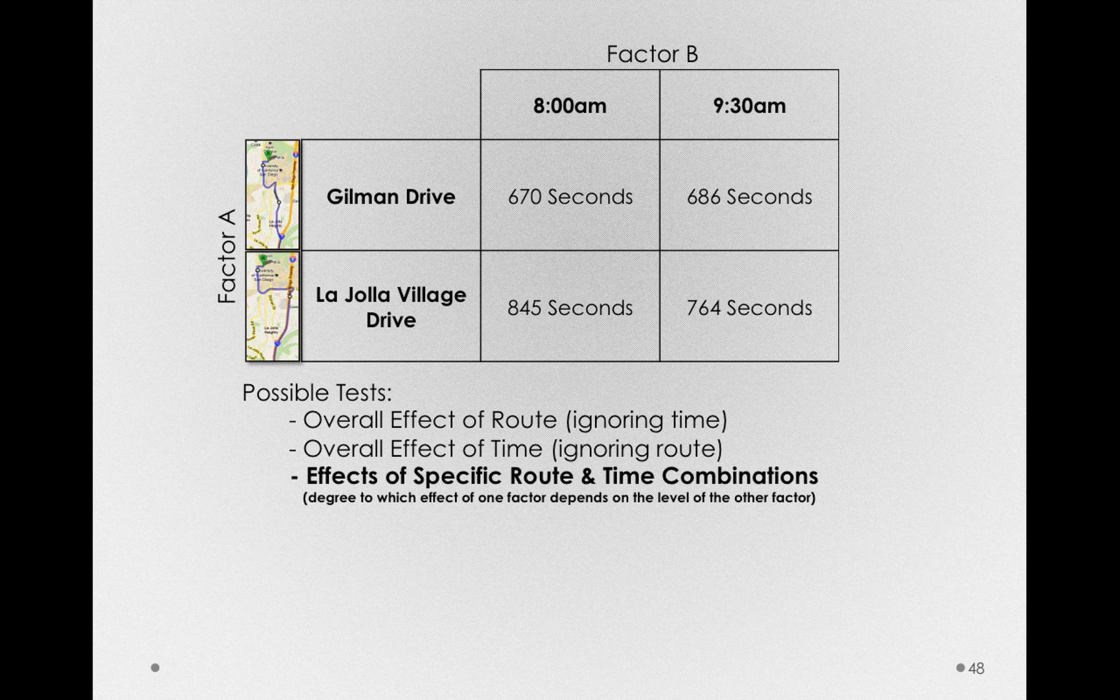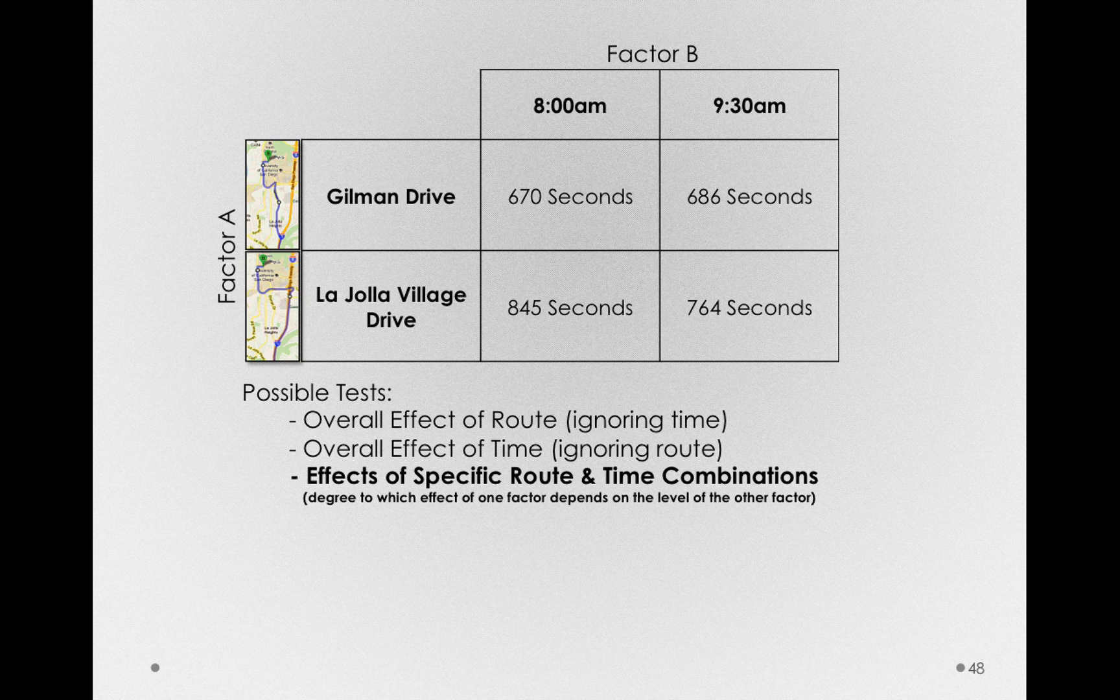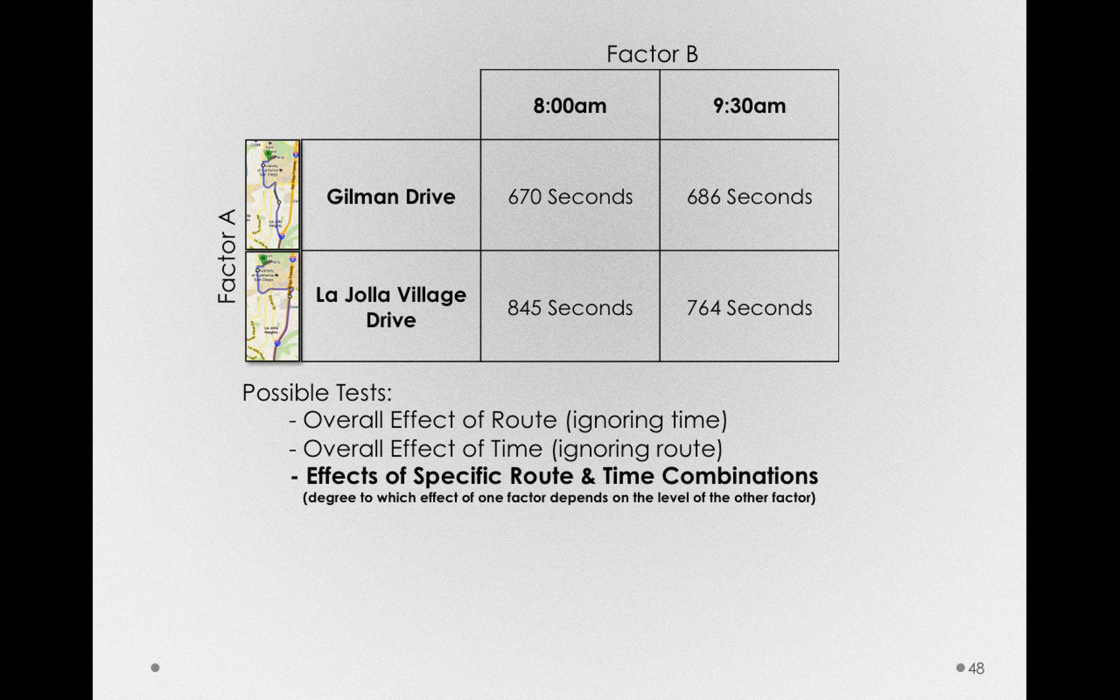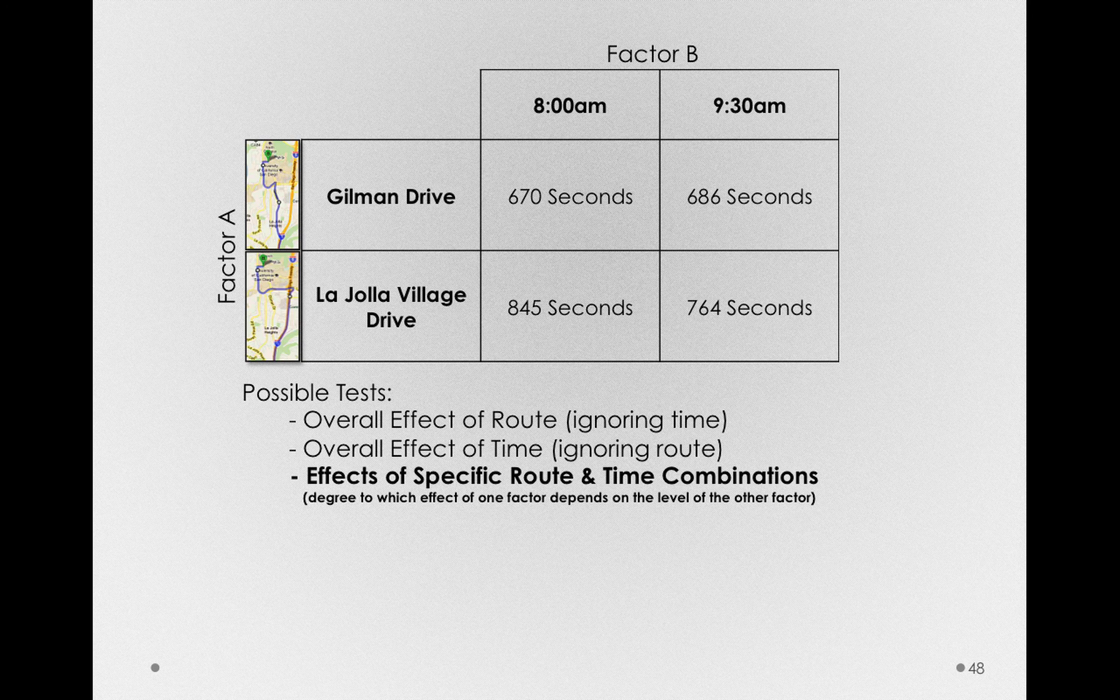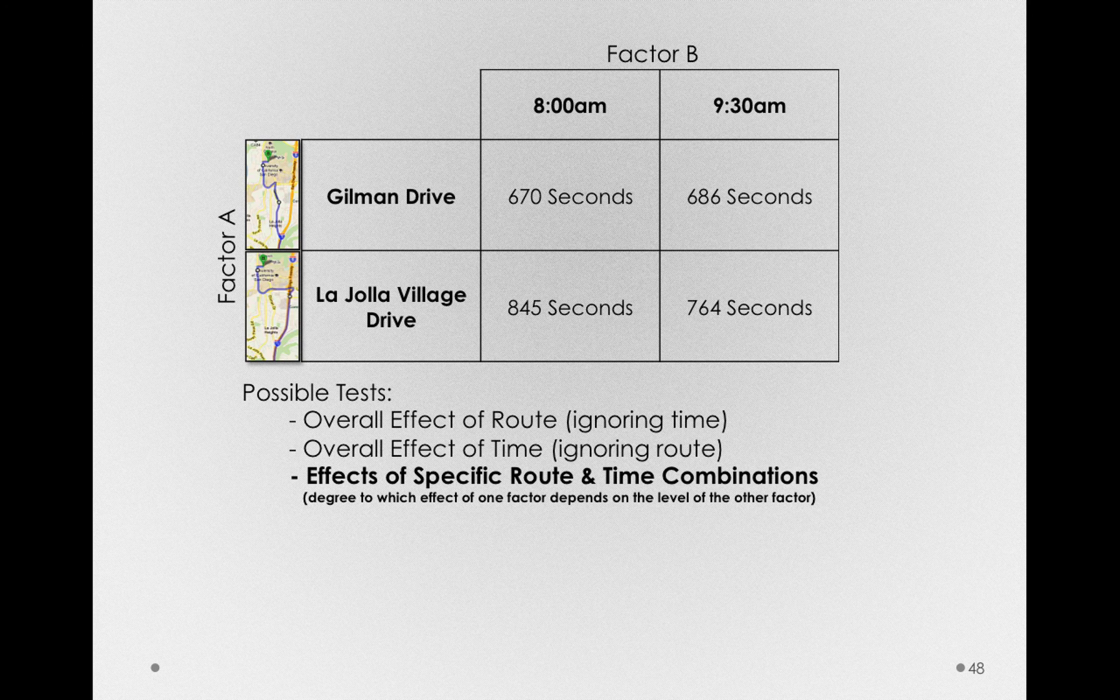And this test, as it turns out, is one very important reason to do a factorial design, because there are times when we have very specific reasons to question whether one factor's effect depends on the level of another factor. Being able to find an interaction statistically may tell us something very interesting about the world.